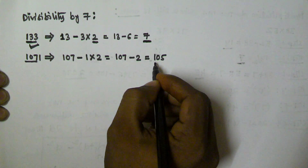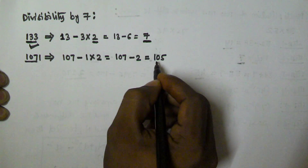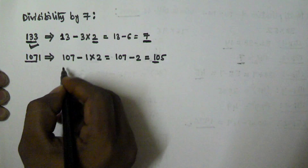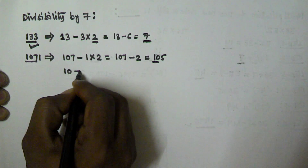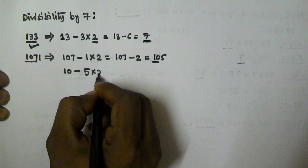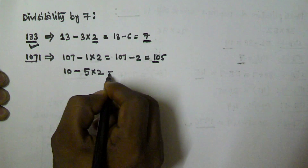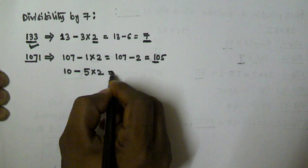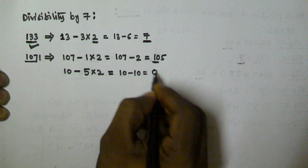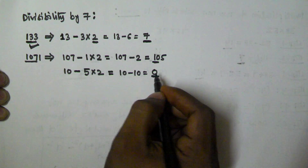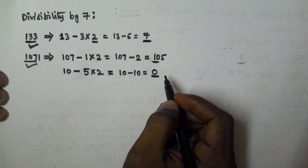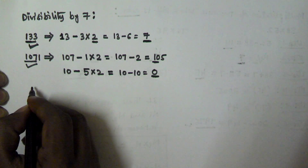Since we do not immediately know if 105 is divisible by 7, we repeat the same procedure. In 105, we take all digits except the unit digit — that is 10 — then subtract 5 multiplied by 2, giving us 10 minus 10, which equals 0. So 1071 is divisible by 7.